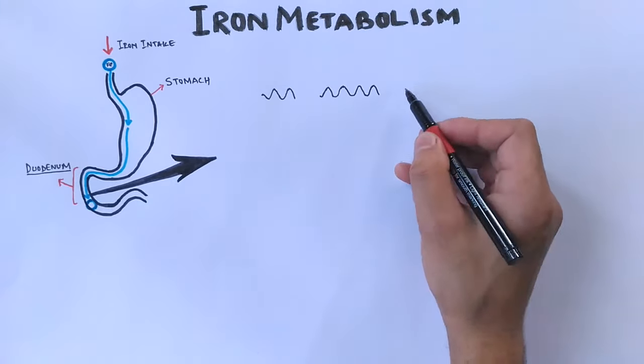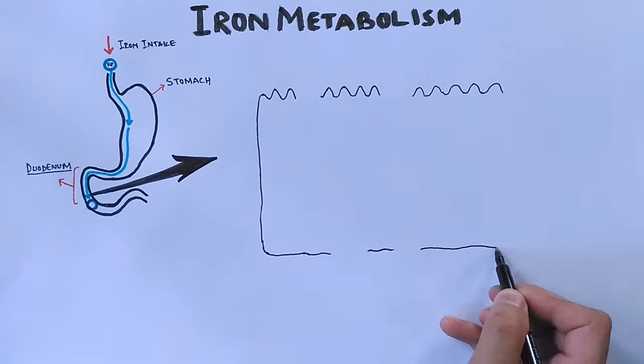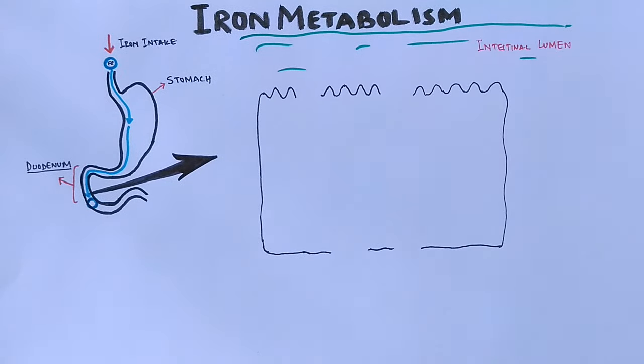In the small intestine we have absorptive cells called the enterocytes shown in the diagram. On top of it we see we have an intestinal lumen. Looking at the enterocyte cell, we see it has got different transmembrane enzymes and proteins attached to it.